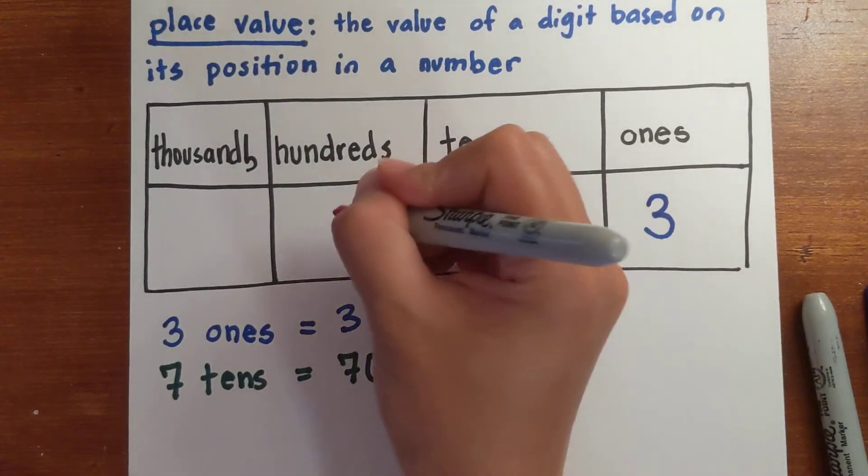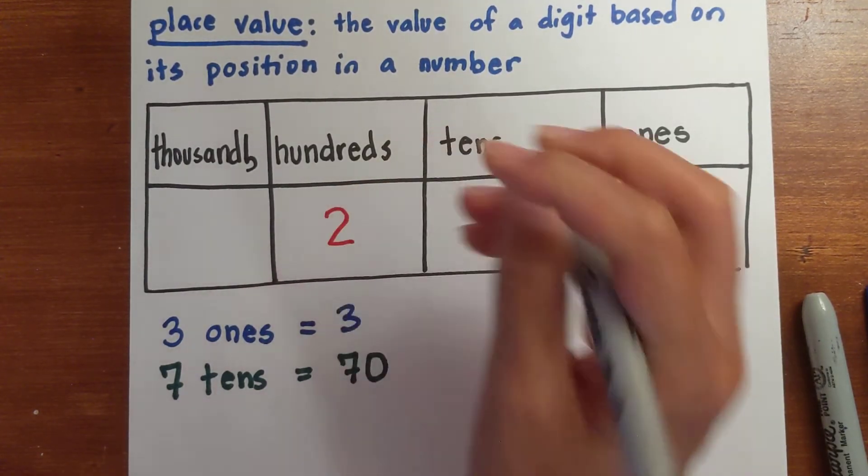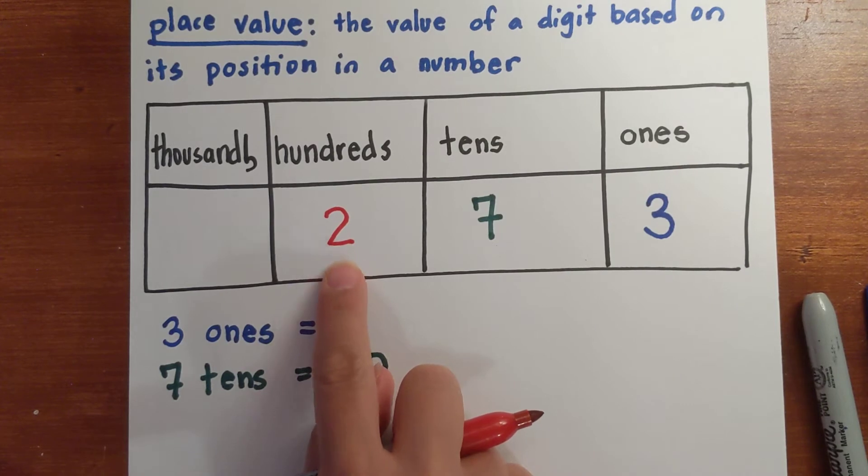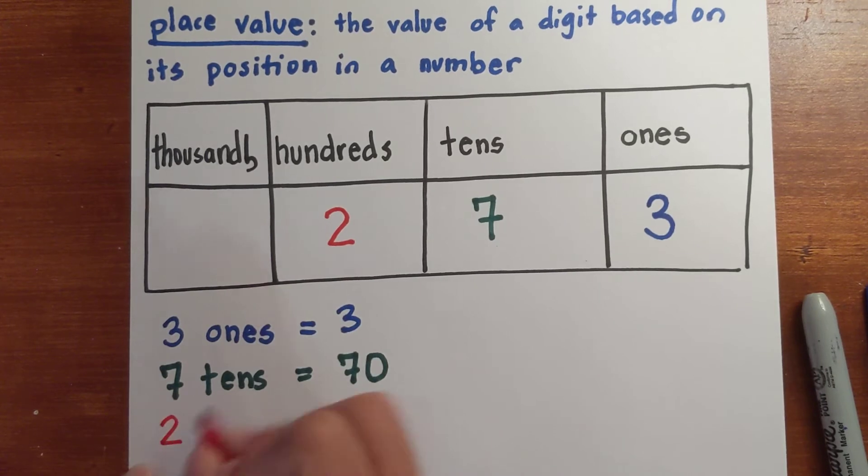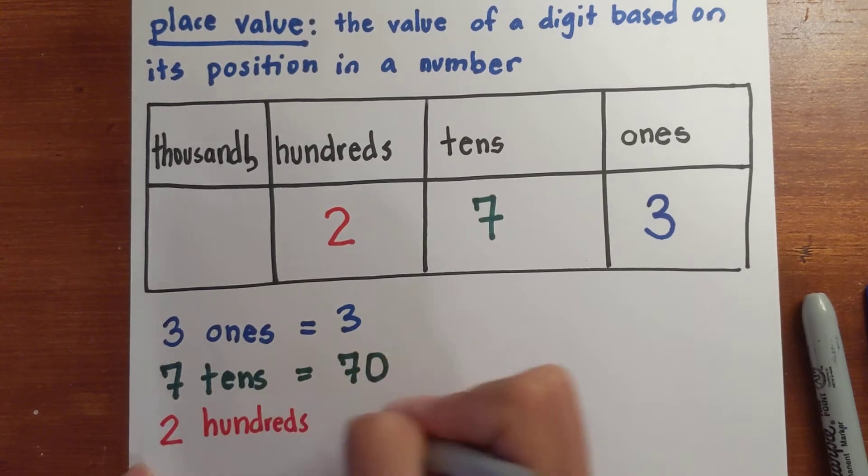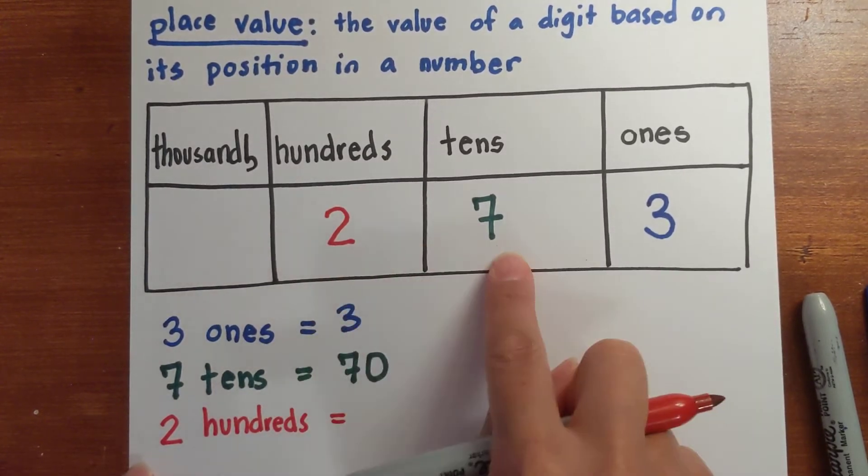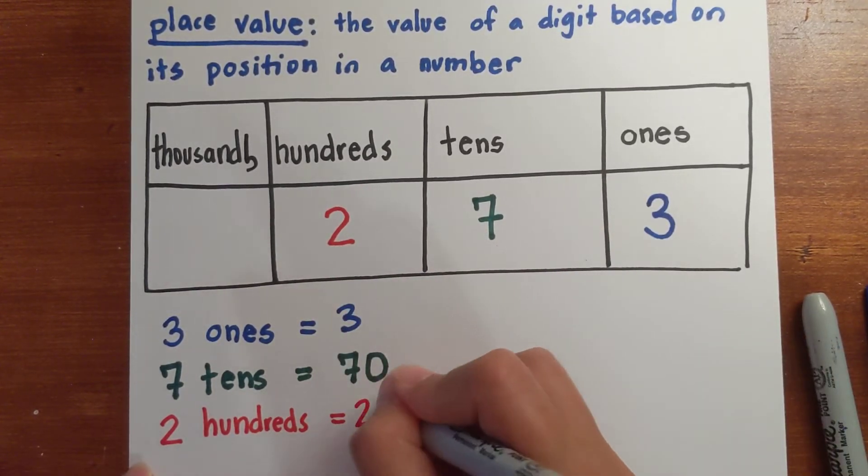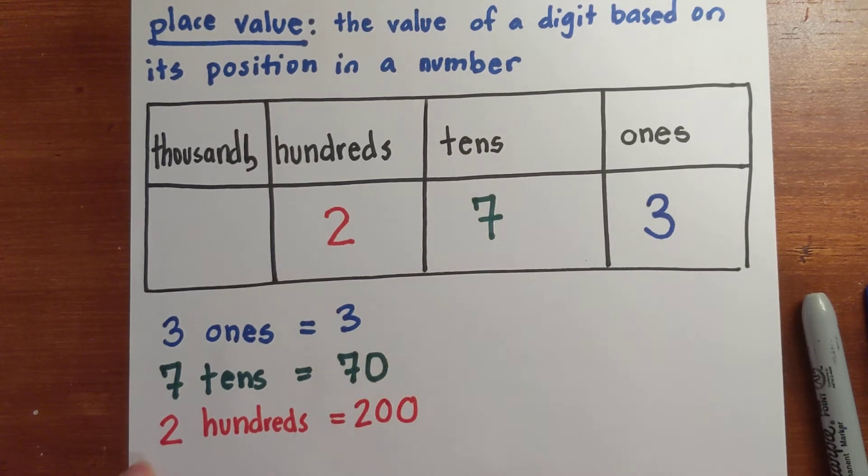You should start to see a trend or a pattern. Let's look at the hundreds. Let's say I have two in this place value. If you write a number in this place value right here, it's considered the hundreds. So I have two hundreds, and that is equal to two hundred.